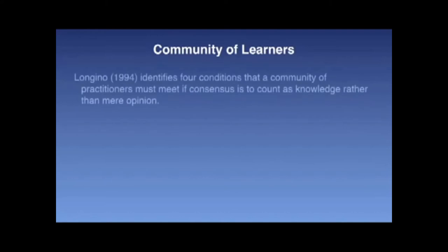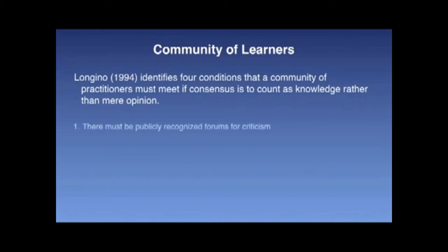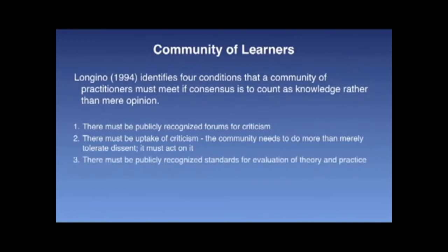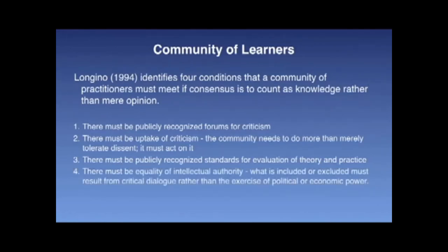Longino, in 1994, identifies four conditions that a community of practitioners must meet if consensus is to count as knowledge rather than mere opinion. Firstly, there must be publicly recognized forums for criticism. Secondly, there must be uptake of criticism — the community must do more than merely tolerate dissent, it must act on it. Thirdly, there must be publicly recognized standards for evaluation of theory and practice. And fourthly, there must be equality of intellectual authority.